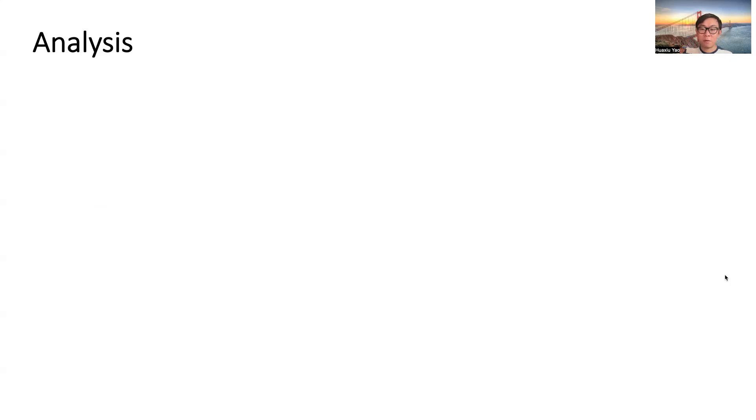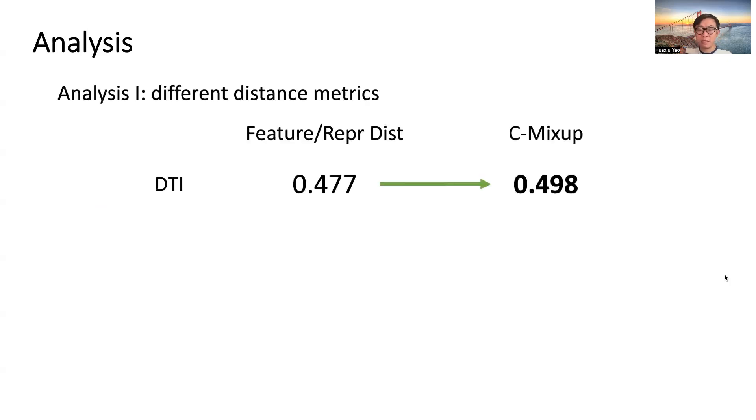Finally, we conduct a few quantitative analyses. First, we compare the performance under different distance metrics. We show the results in DTI here, and please refer to our paper for results on more datasets. We can see that using label distance in C-Mixup outperforms using feature distance and representation distance.